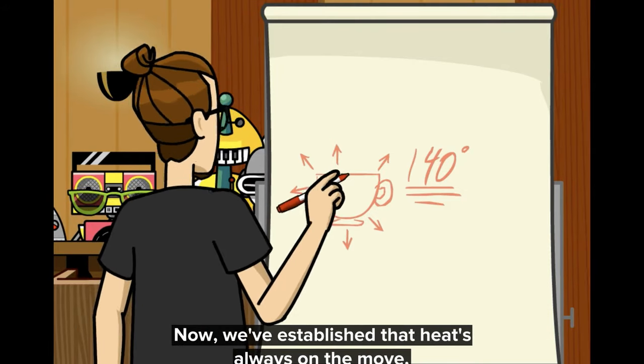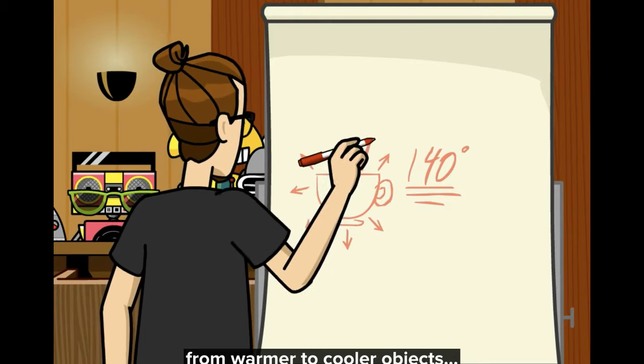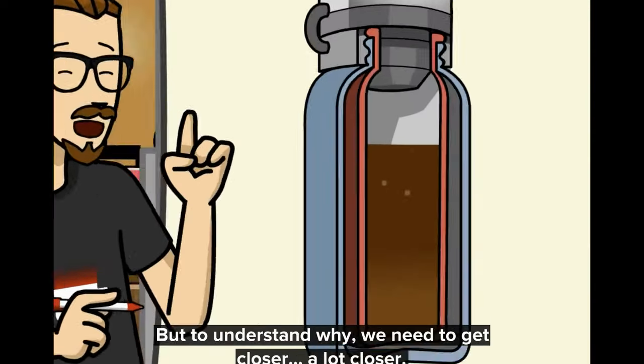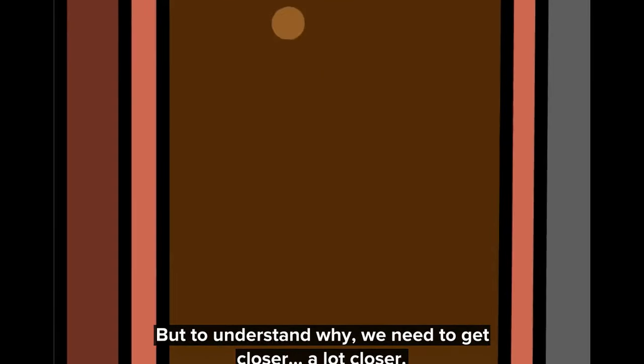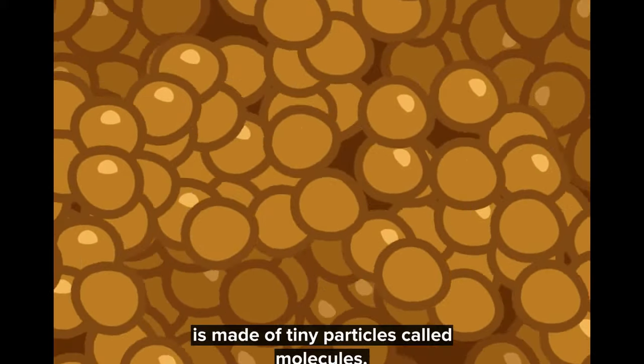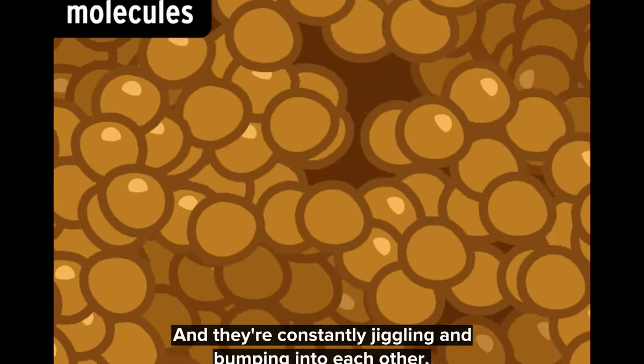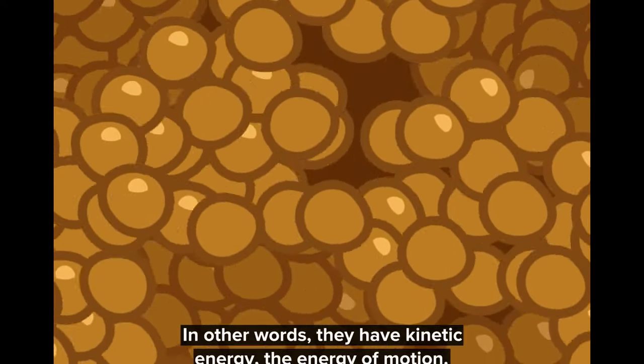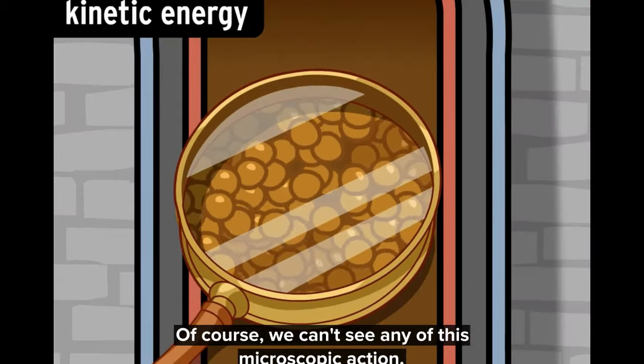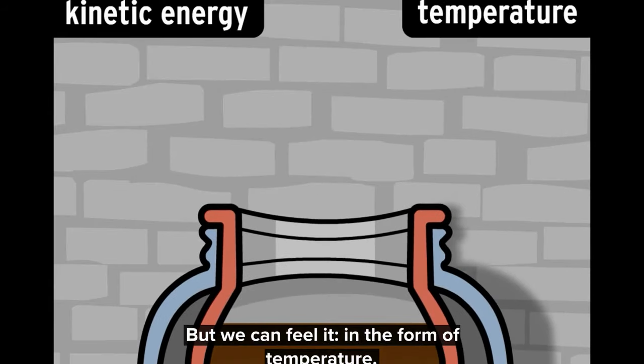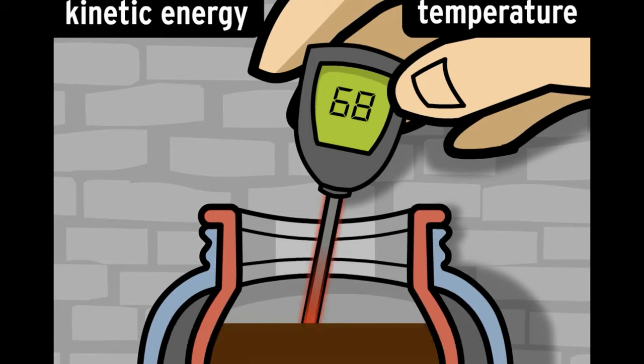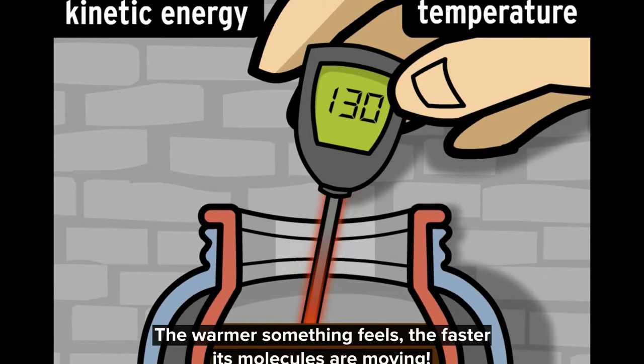Now, we've established that heat's always on the move from warmer to cooler objects, and that a thermos can slow this process down. But to understand why, we need to get closer. A lot closer. Coffee, like any other substance, is made of tiny particles called molecules, and they're constantly jiggling and bumping into each other. In other words, they have kinetic energy, the energy of motion. Of course, we can't see any of this microscopic action, but we can feel it in the form of temperature. That's the average kinetic energy of all the molecules in an object. The warmer something feels, the faster its molecules are moving.